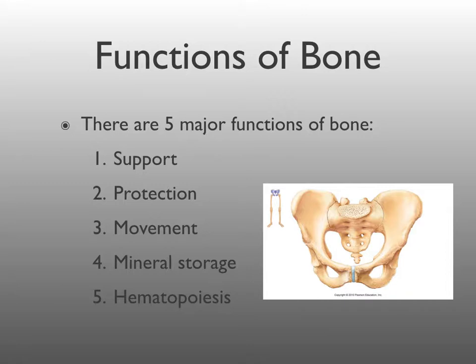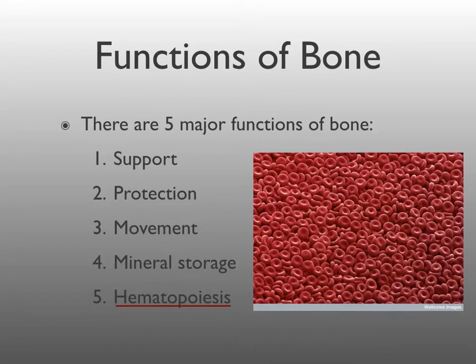For example, if the level of calcium in your blood drops too low, a hormone is produced that causes the release of calcium from bones into the surrounding environment. The last major function of bone is hematopoiesis — the process of blood cell formation. Blood cells are produced from hematopoietic stem cells in the bone marrow. Red blood cells, for example, are formed through hematopoiesis in the red bone marrow. You are responsible for knowing all five major functions of bone.